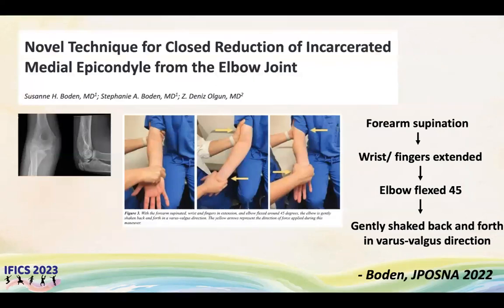Regarding reduction of an incarcerated medial epicondyle fragment within the elbow joint, this fragment is mostly extracted by open reduction. However, recently a Posner article described a technique for closed reduction: the forearm is supinated, the wrist and fingers are extended, the elbow is flexed to 45 degrees, and then the elbow is gently shaken back and forth in varus-valgus direction to extract the incarcerated fragment out of the joint.